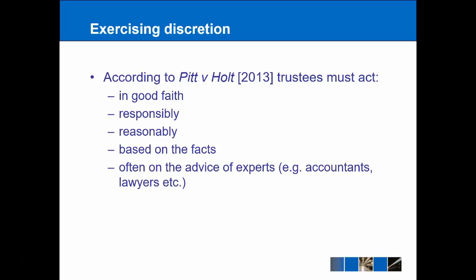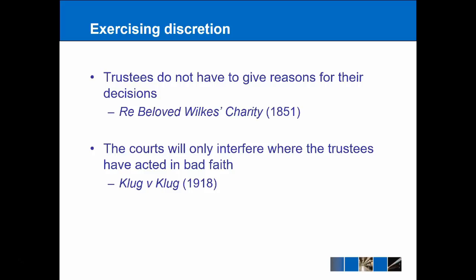While trustees don't have to give reasons for their decisions, the courts will only step in when the trustees have acted in bad faith — in other words, where they haven't met the criteria from Pitt v Holt. That comes from Clugg v Clugg 1918. However, if they do decide to give reasons, that is something the court can examine when considering whether the trustees acted in bad faith.